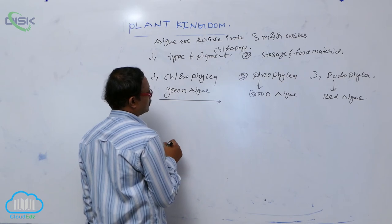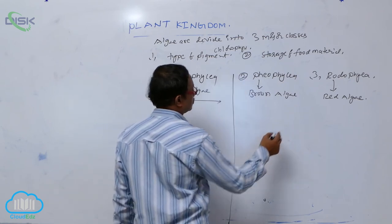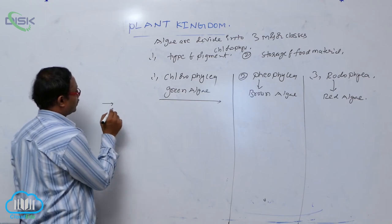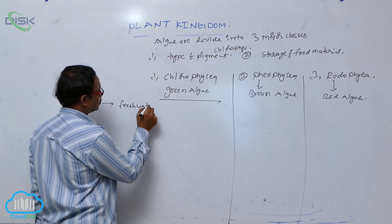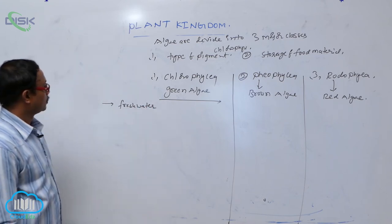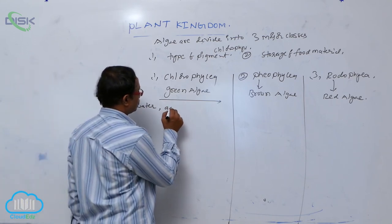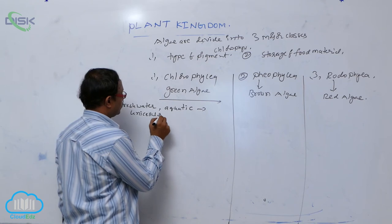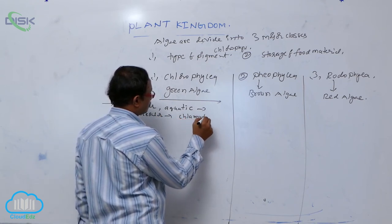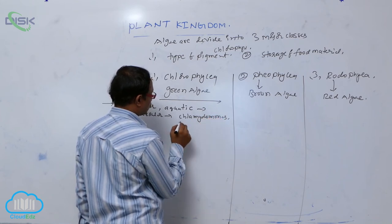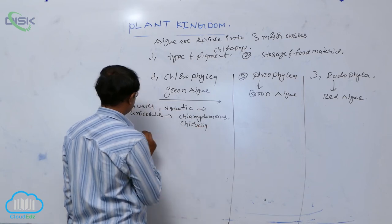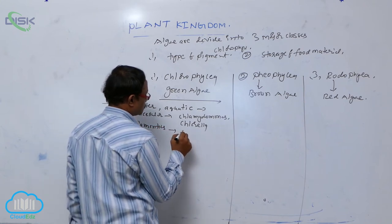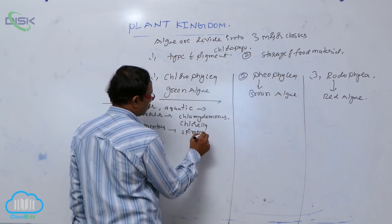Chlorophyceae are the green algae. They are generally grown in fresh water and are aquatic. Some are unicellular, for example Chlamydomonas. Some are filamentous, for example Spirogyra and Ulothrix. Some are colonial.